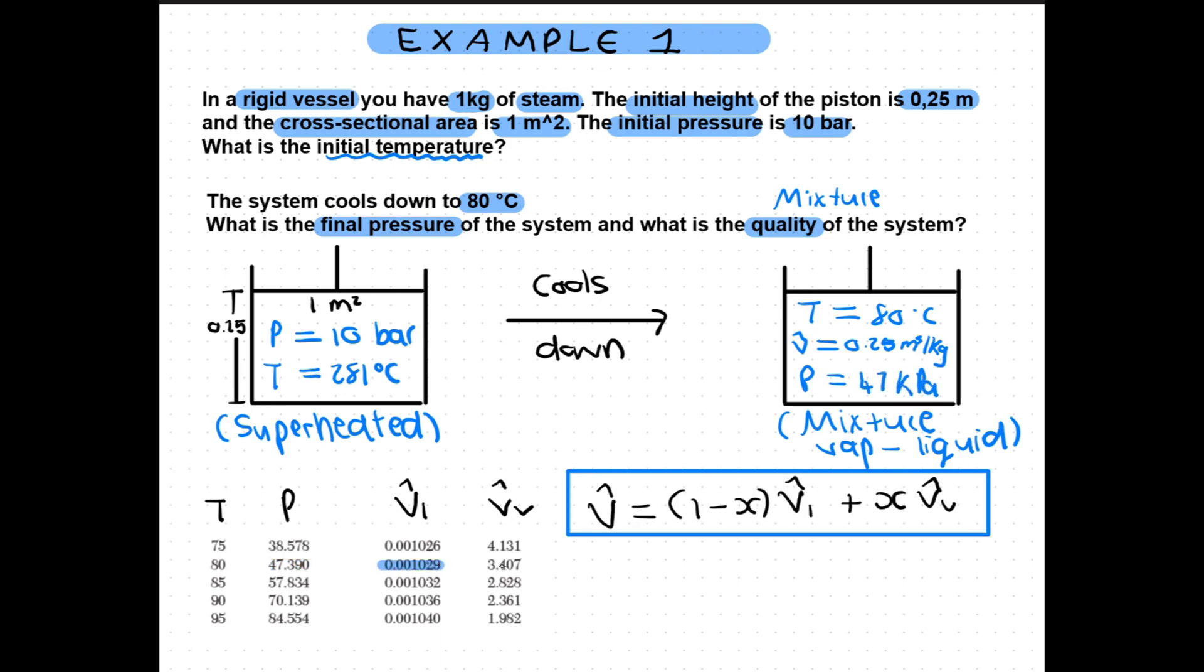To calculate the quality we can just use our system's volume and the liquid and vapor volume from our steam tables. We plug it into our formula and get a very low quality of 0.07. A low quality indicates more liquid than vapor.